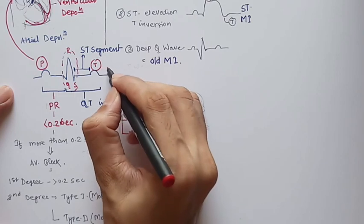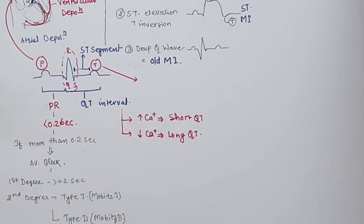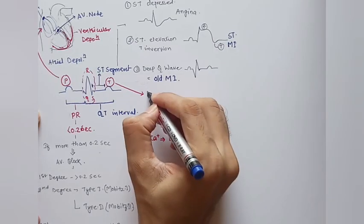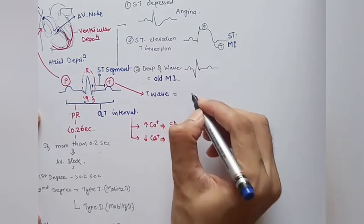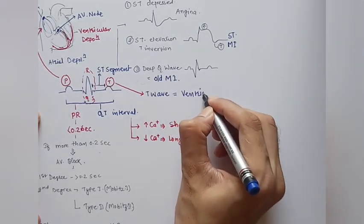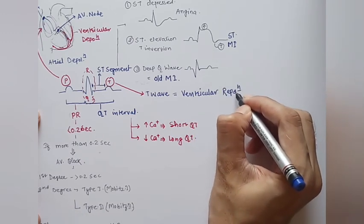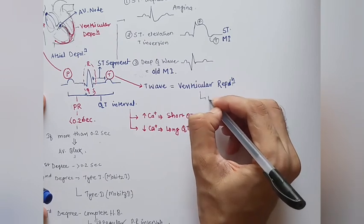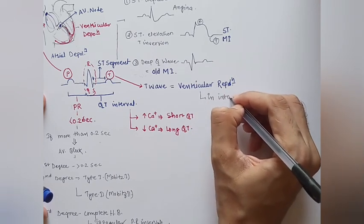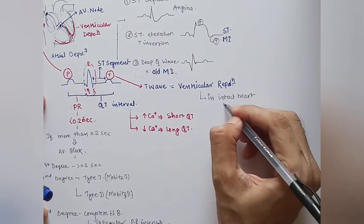The T wave represents ventricular repolarization. As the electrical activity of depolarization in the ventricular muscle fibers is over, the ventricle goes to repolarization, represented by the T wave. There is no separate wave for atrial repolarization because the QRS complex hides it.